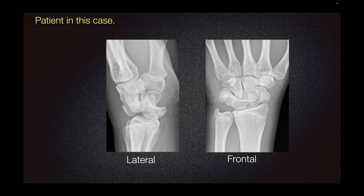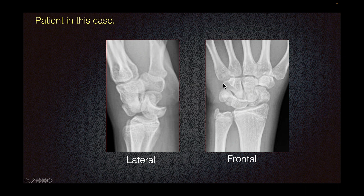The patient in this case presented with this wrist radiograph. Here we can see that there is volar dislocation of the lunate with loss of alignment to the radius and also the capitate. Here in our frontal view, we can see that we lost the second arc, which we will talk about, and also a suspicious fracture at the waist of the scaphoid right here.